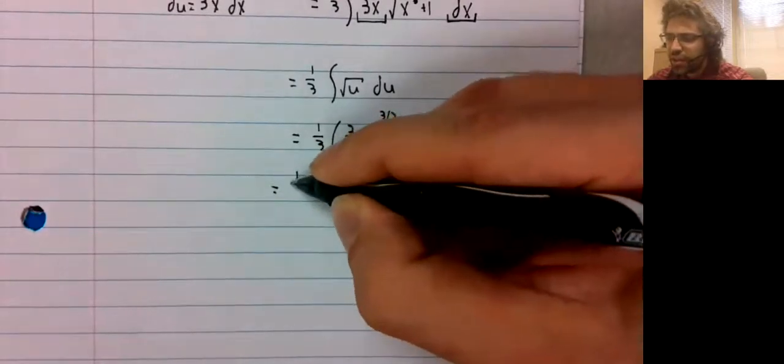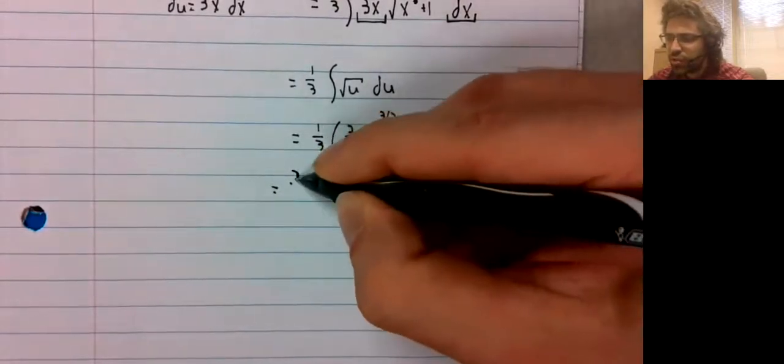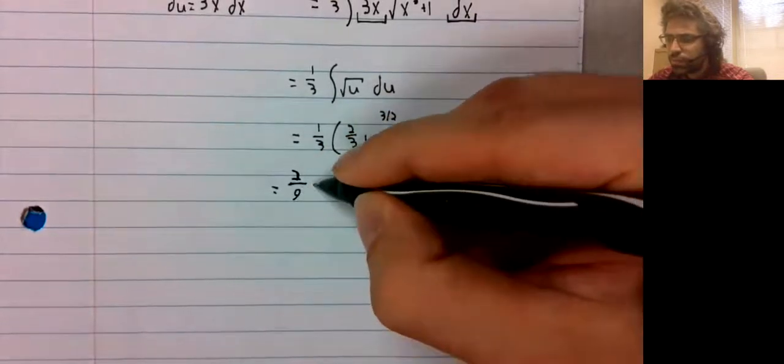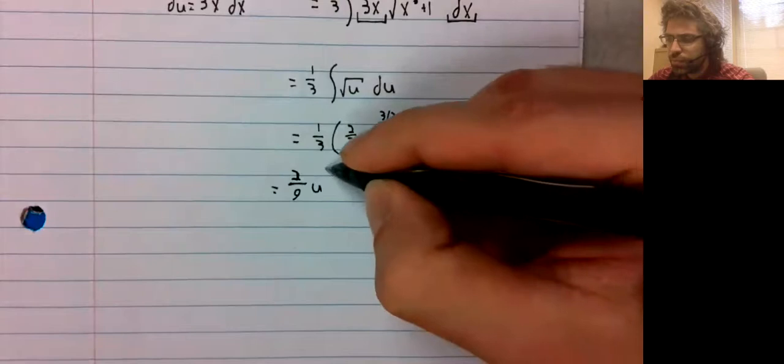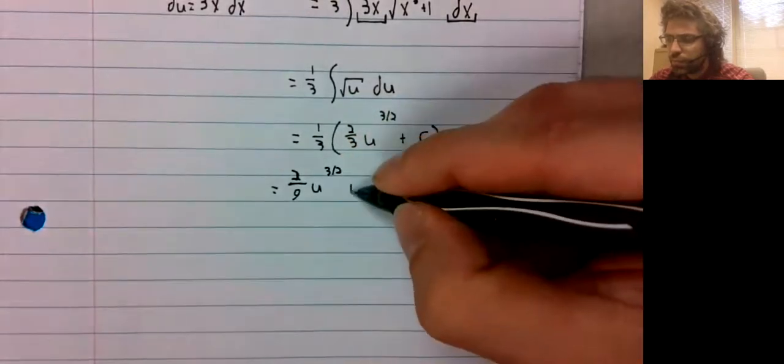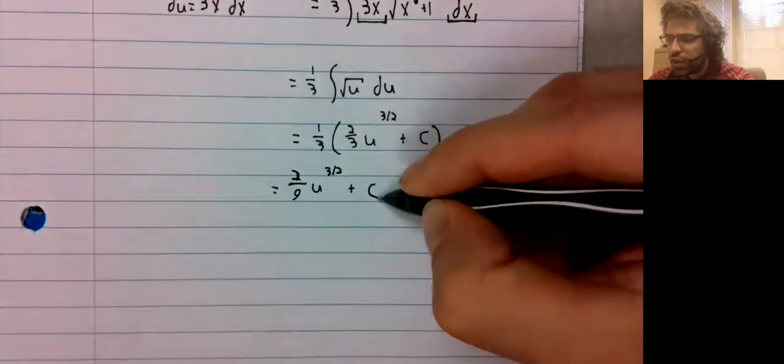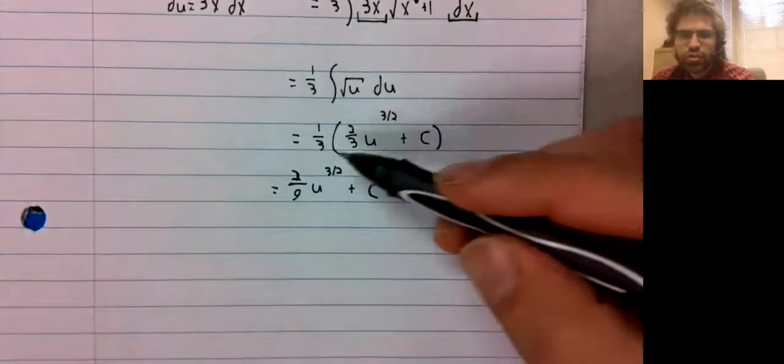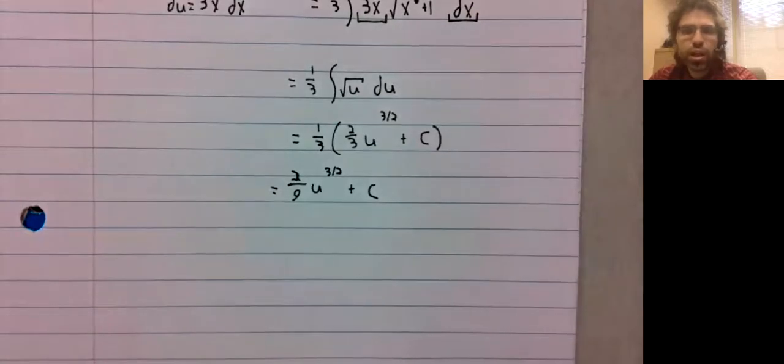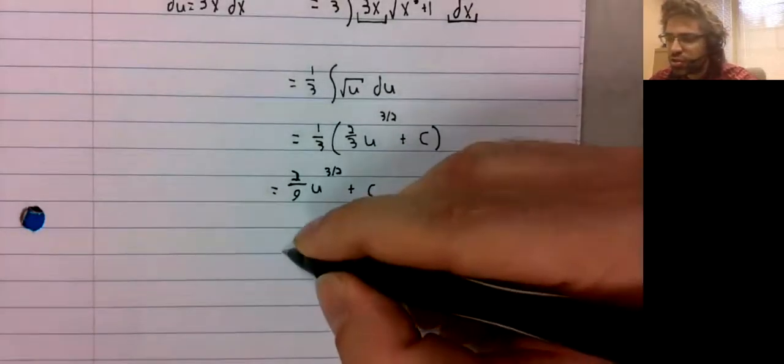And as we've discussed before, an arbitrary constant times a third. Well, that's still an arbitrary constant.